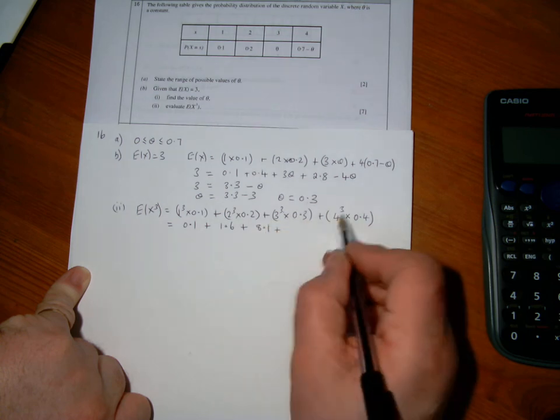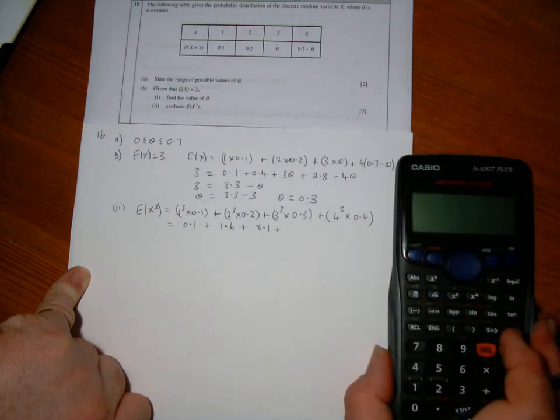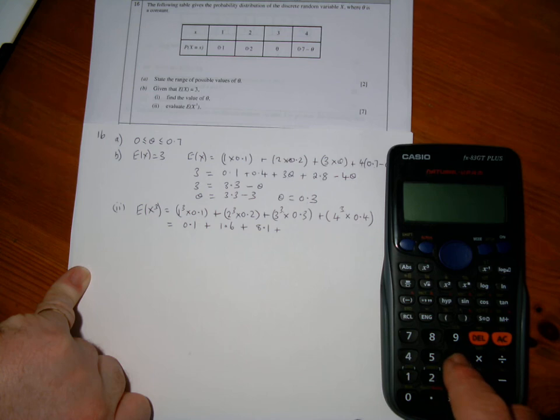And 4 cubed times 0.4, so that's 64 times 0.4.